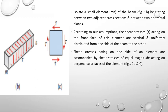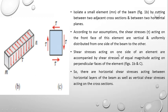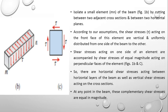This is called the principle of complementary shear stress. If this tau creates a clockwise moment, these two tau values will create an anticlockwise moment, and they cancel each other. Even taking the summation of forces, tau cancels with tau on each pair of faces, and therefore the element is in equilibrium. There are horizontal shear stresses acting within horizontal layers of the beam as well as vertical shear stresses acting on the cross sections. At any point in the beam, these complementary shear stresses are equal in magnitude.